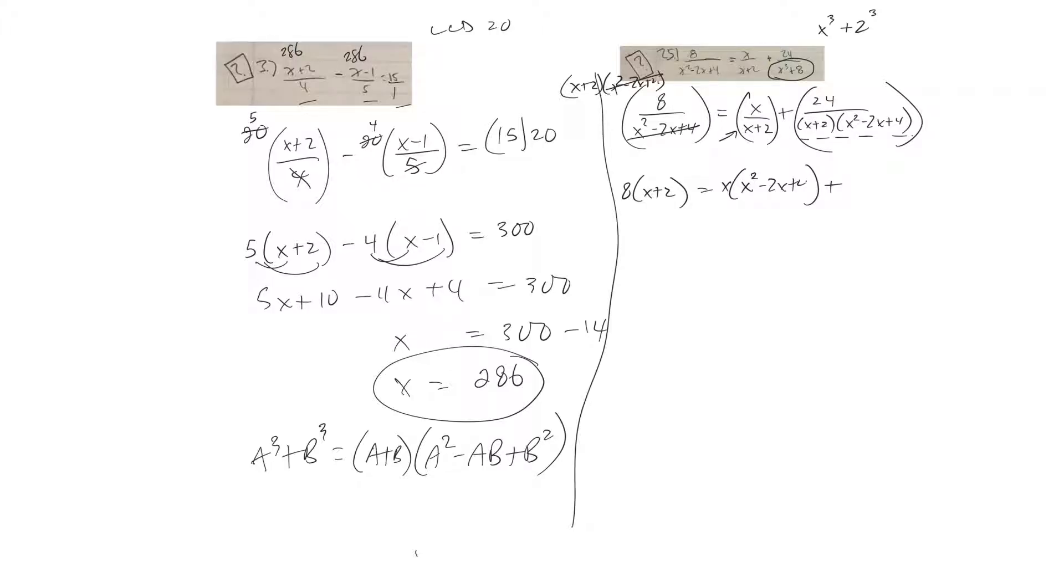And then on the last one, the whole thing would cancel. I should have the x plus 2 and the x squared minus 2x plus 4 there. So that whole cancels, and on this one, same thing, x plus 2, x squared minus 2x plus 4.